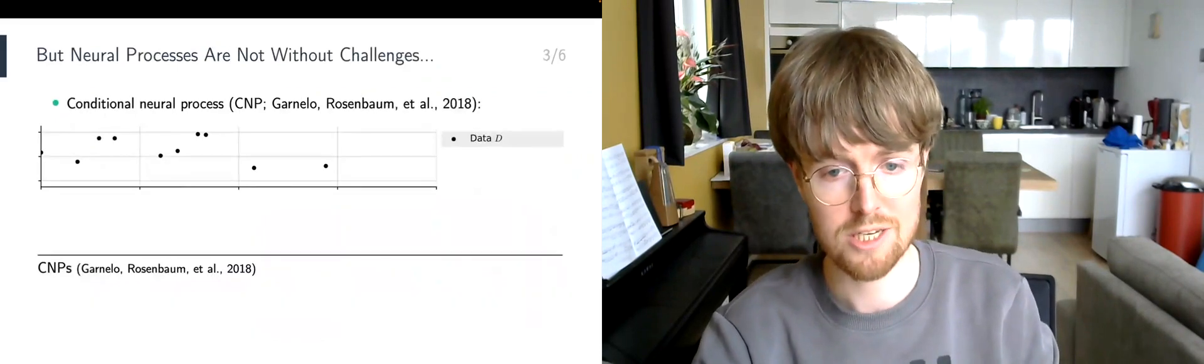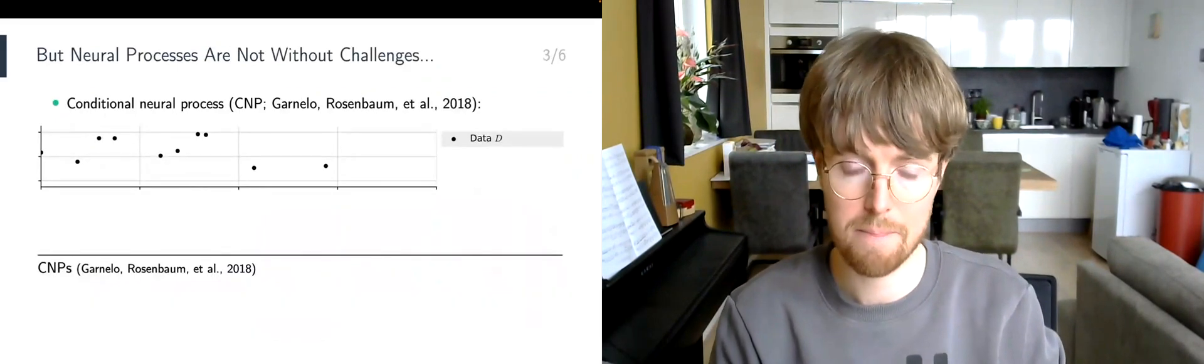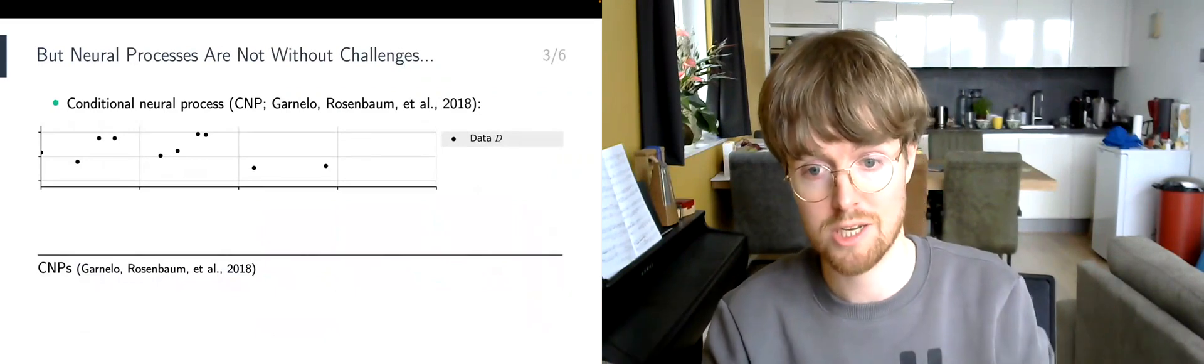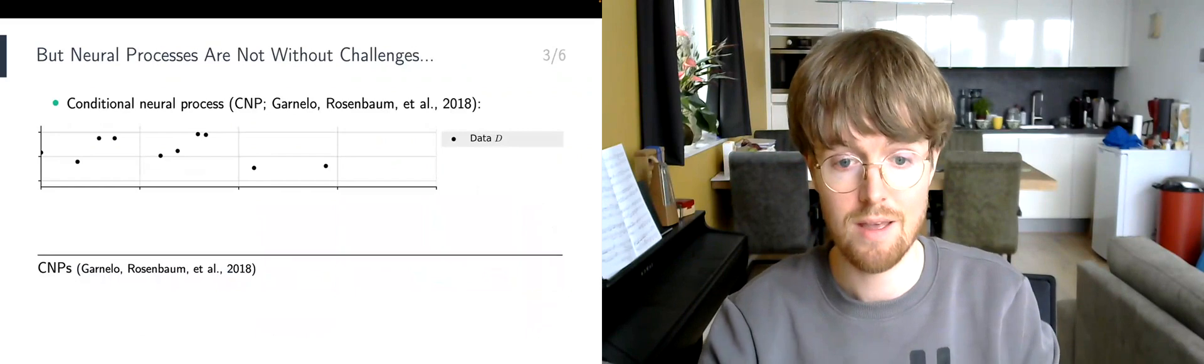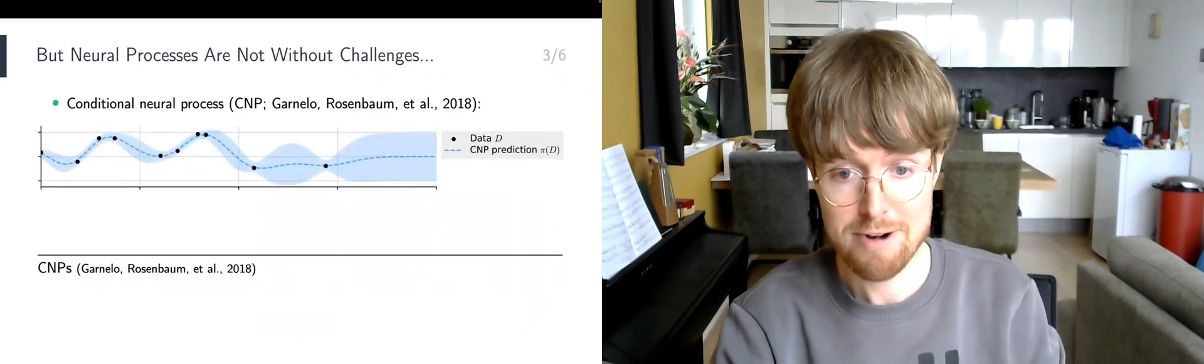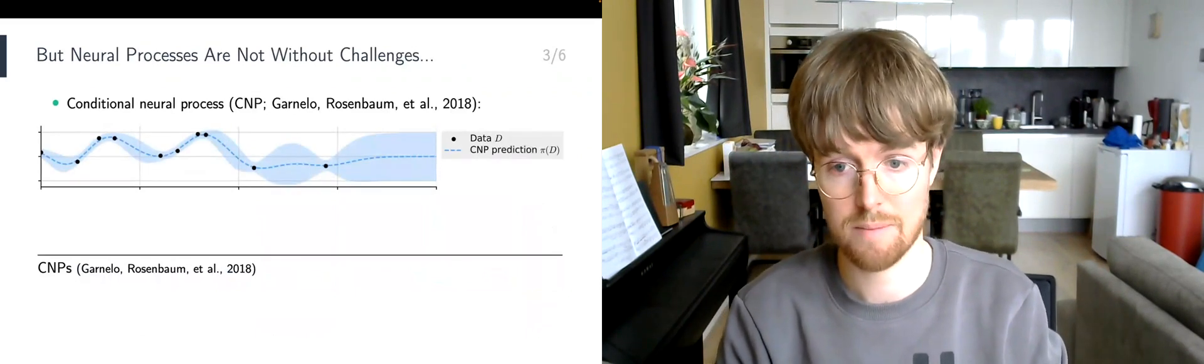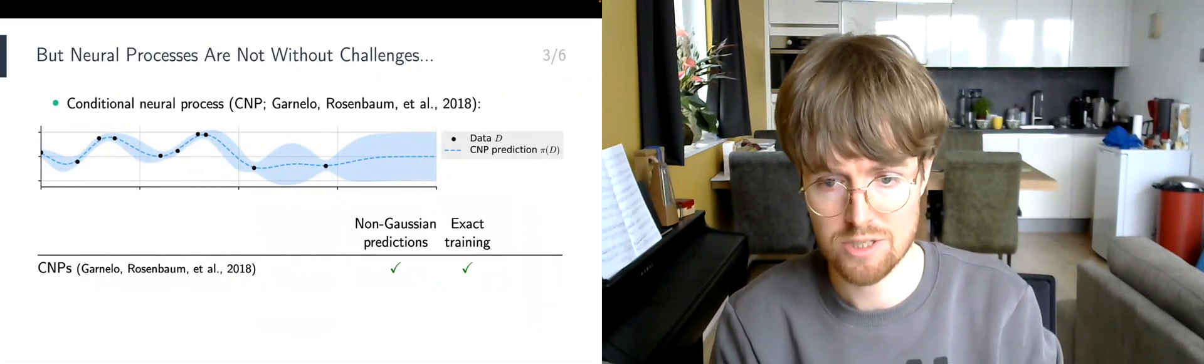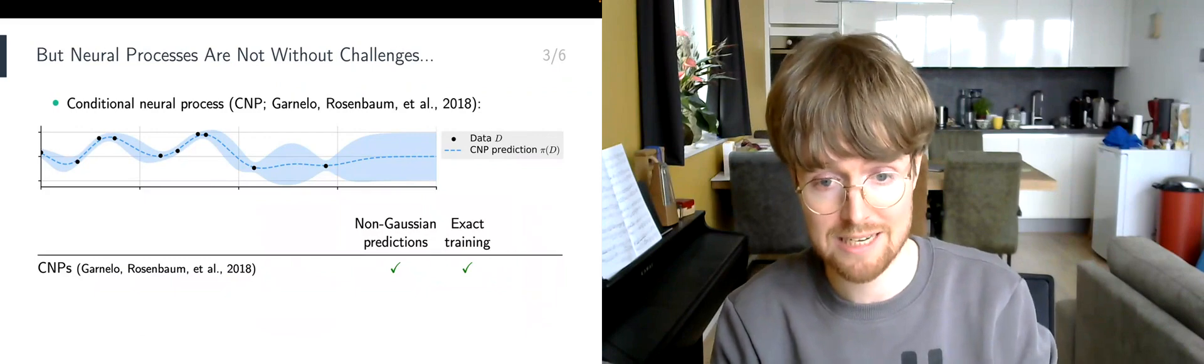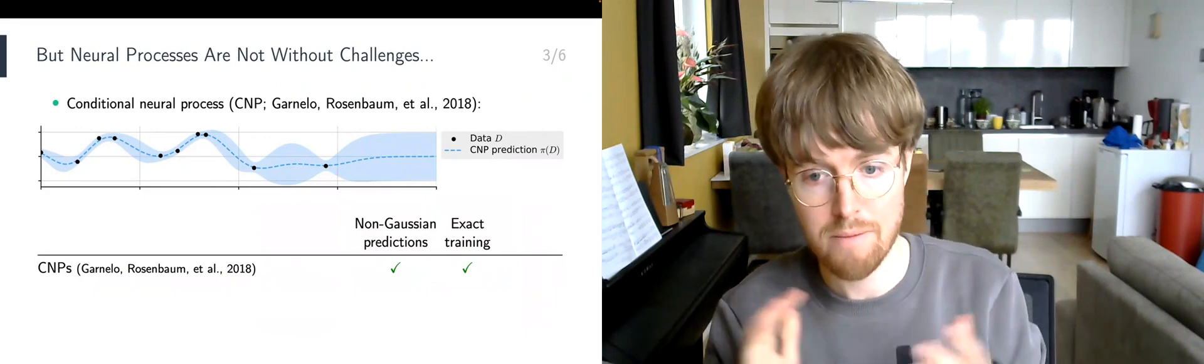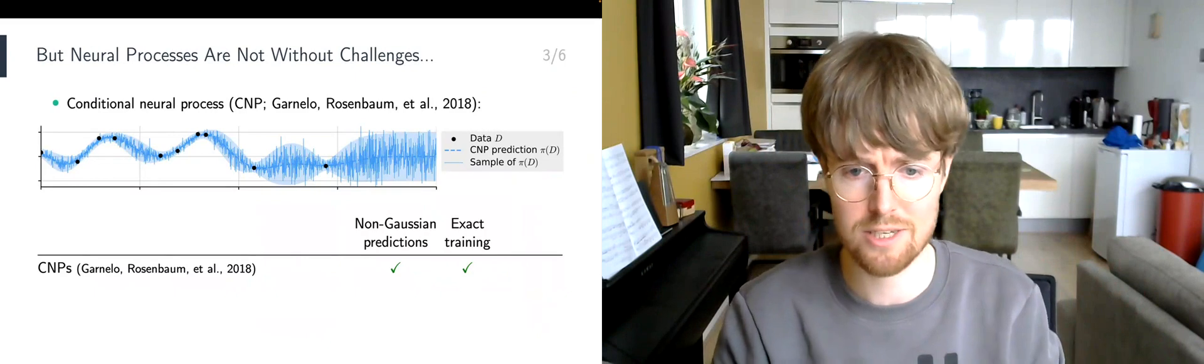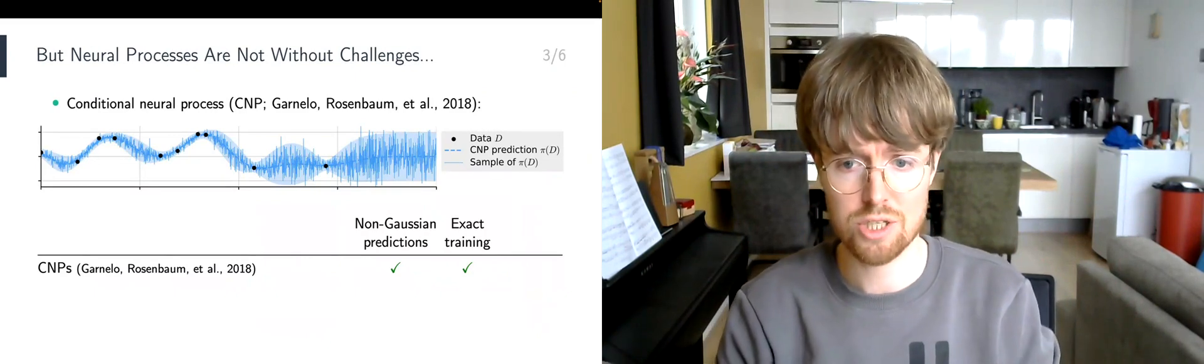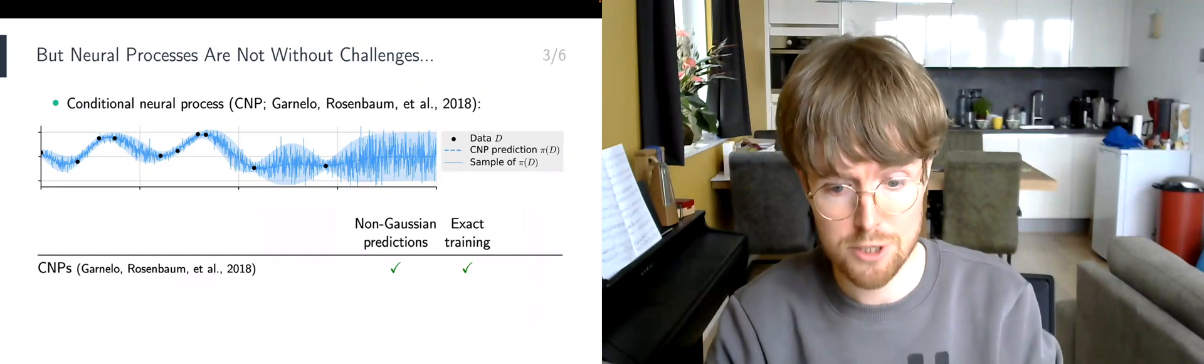Although neural processes work extremely well in practice, they are no panacea. Consider the first most basic neural process, the conditional neural process, abbreviated CNP. Although CNPs can be readily generalized to non-Gaussian marginals and can be trained with a simple closed-form objective, if we try to sample from the prediction of the CNP, then this sample looks incredibly noisy. The problem is that the CNP does not model correlations, so the CNP is unable to produce coherent samples.